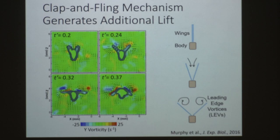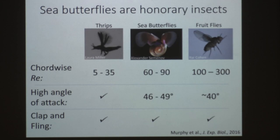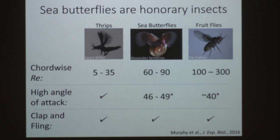We concluded that these sea butterflies are in fact honorary insects. They use the same fluid dynamics to swim as insects like thrips and fruit flies use to fly. The Reynolds number for all these organisms is in the range of five to several hundred; all use a high angle of attack during power and recovery strokes, and all use the clap-and-fling mechanism. Sea butterflies are actually sort of like butterflies.